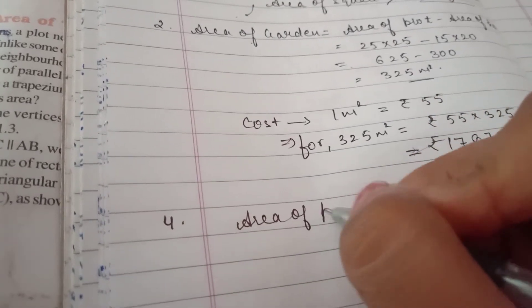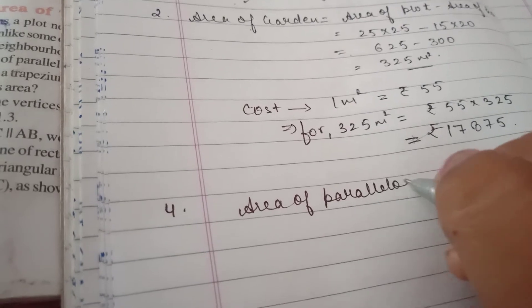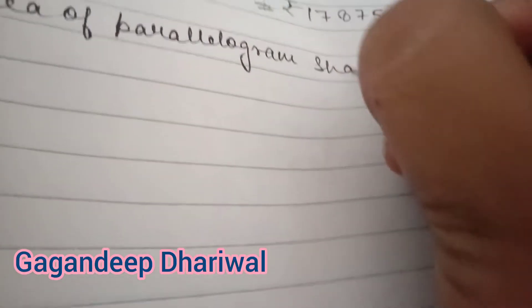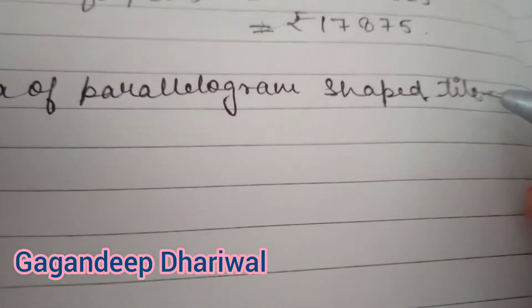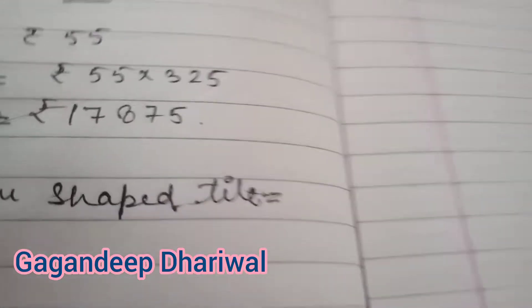First, we have to find the area of the parallelogram, which is base multiplied by height. Since the flooring tile is in the shape of a parallelogram, the area of the parallelogram-shaped tile equals height into base.